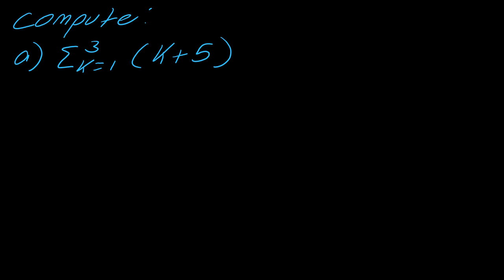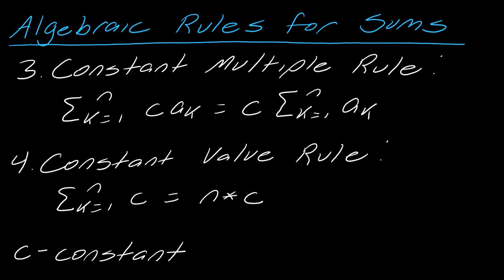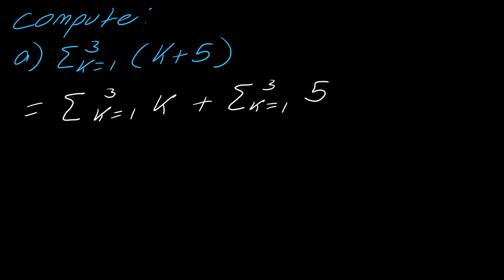So let's talk about how to actually use this. Looking at this first sum, what I could do here is break this up into two pieces. Instead of having k plus 5, I have the sum of k and then the sum of just 5. And the reason why I do this is because this plus 5, I can calculate this pretty easily using this constant value rule. And then all I have to figure out is summing up these pieces here. So it can simplify the work that you have to do.